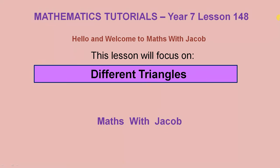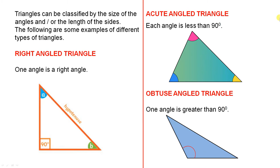Hello and welcome to Maths with Jacob. This lesson will focus on different triangles. Triangles can be classified by the size of the angles and/or the length of the sides. The following are some examples of different types of triangles.